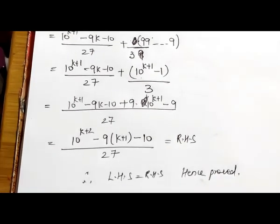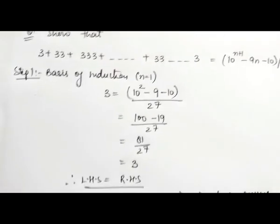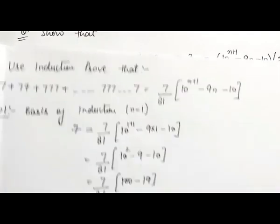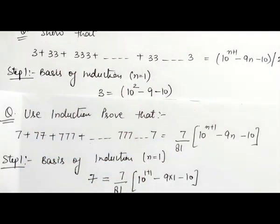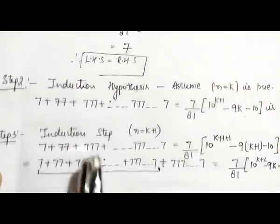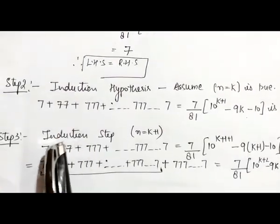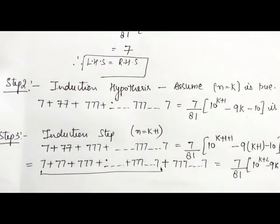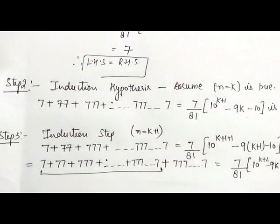This is how we solve these types of questions on mathematical induction. We discussed two questions: the 7+77+777... series and the 3+33+333... series. There are 3 steps: basis of induction (n=1), induction hypothesis (assume n=k is true), and the induction step (prove for n=k+1 using step 2). I hope you understood this. If you have any query, ask in the comment section or send to our business email. Keep watching. Thank you.